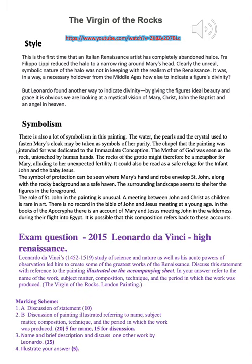The surrounding landscape seems to shelter the figures in the foreground. The role of St John in the painting is unusual — a meeting between John and Christ as children is rarely seen or captured in art. There is no record in the Bible of John and Jesus ever having a meeting at a young age. In the books of the Apocalypse, there is an account of Mary and Jesus meeting John in the wilderness during their flight into Egypt, and it is possible that this composition refers to that account.